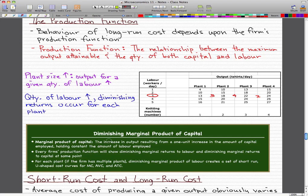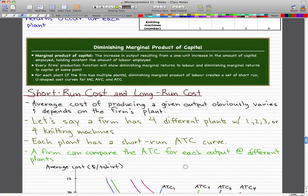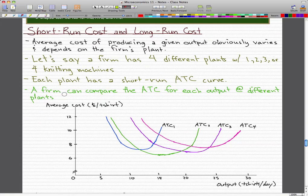Now, every firm's production function will show diminishing marginal returns of labor and diminishing marginal returns to capital at some point. So no firm is impervious to this kind of behavior. For each plant, if the firm has multiple plants, the diminishing marginal product of labor creates a set of short-run U-shaped cost curves for marginal cost, average variable cost, and average total cost.